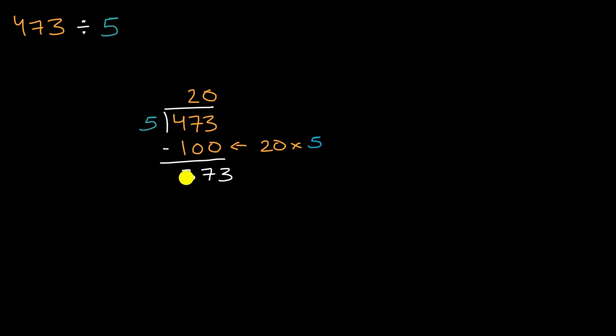So how many times can 5 go into 373? Well, if 20 times 5 was 100, this is 300 here. So maybe we can go another 60 times. So let me put a 60 right over there. And so what is 60 times 5? Well, six tens times 5 would be 30 tens, which is 300. And so how much further do we have to go? So we still have 73 left. 373 minus 300 is 73.